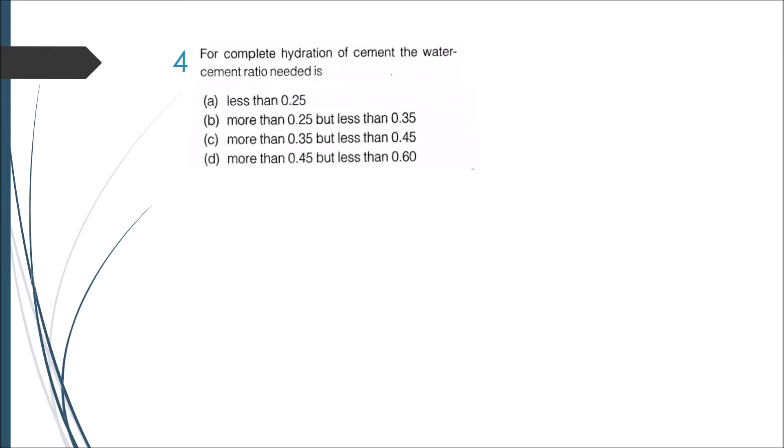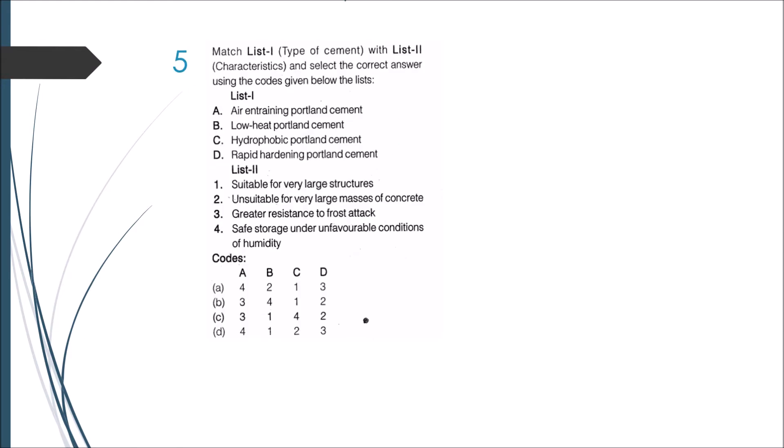Next is: for complete hydration of water, the water-cement ratio needed is more than 0.35 but less than 0.45. Next, again we have two lists. The first one is the type of cement that we are using and second one is the application. First is air-entraining Portland cement.